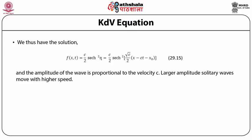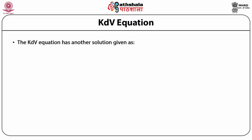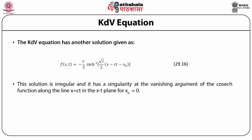Larger amplitude solitary waves move with higher speed. A traveling KdV soliton is shown in the figure. The KdV equation also has another solution: f(x,t) = −(c/2)·csch²[√(c/2)·(x − ct − x₀)]. This solution is irregular and has a singularity at the vanishing argument, since the cosecant hyperbolic function has a singularity along the line x = ct in the x-t plane for x₀ = 0.